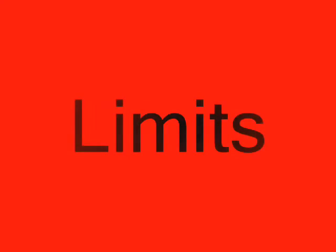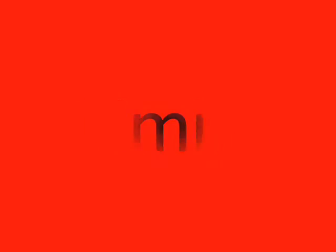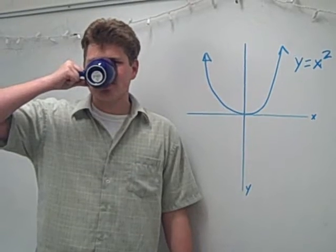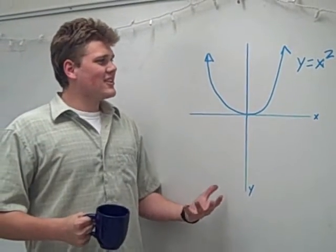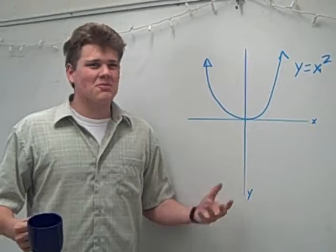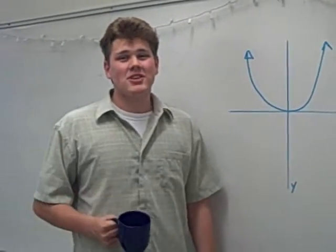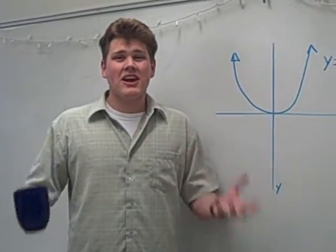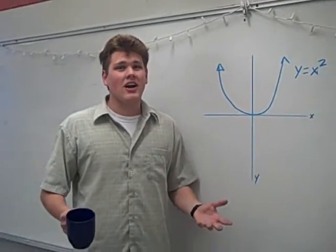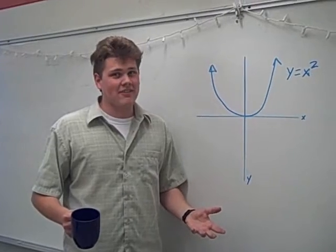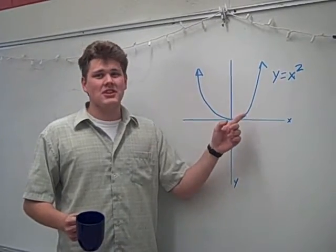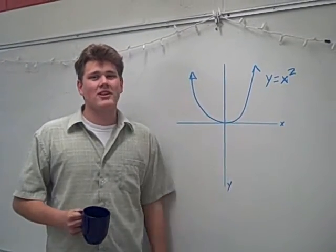This is what a limit actually looks like. Mr. Orrent, this is just a simple y equals x squared graph. And it is. Because you see, limits are everywhere on a graph. It's what a function wants to be at a certain point.